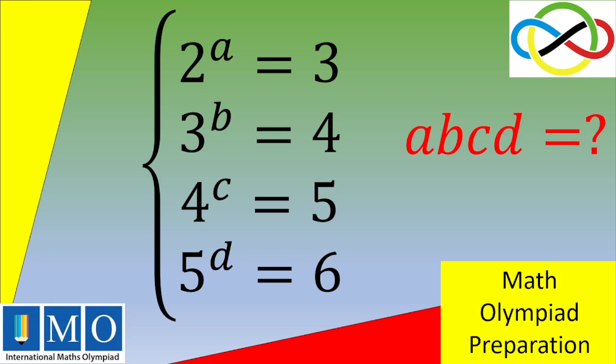Hello and welcome to this video for an exercise to prepare for the math olympiad. We have a system of four equations. The first one is 2^a = 3, the second one is 3^b = 4, the third one is 4^c = 5